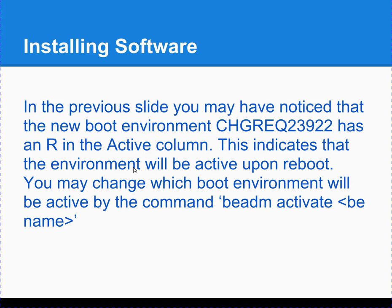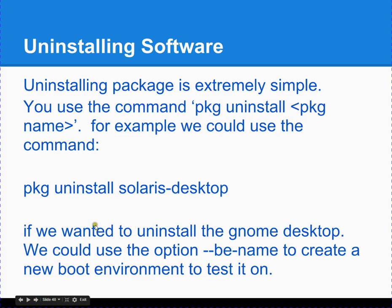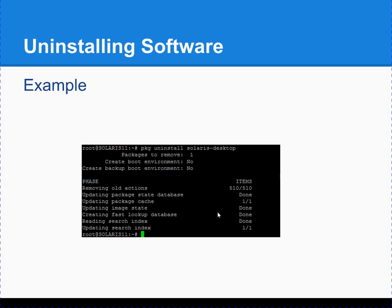To make another boot environment active, use beadm activate and list the boot environment you want to make active — for example, if you didn't want the new Wireshark boot environment active and wanted to keep what you had before. To uninstall a package, it's really easy. You just use the command PKG uninstall and the package name — in this case, Solaris Desktop. Here's an example of that.